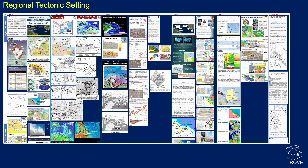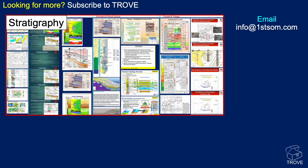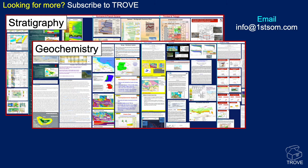With Trove, you can quickly assess a variety of models and interpretations to understand the differences, similarities and implications for different basins and plays. If you're looking for more information, you've got to subscribe to Trove. That's just a small part of our stratigraphy for this region. We have stratigraphic schemes for all the different regions, whether it be Trinidad and Tobago, Suriname and French Guiana, or indeed Guyana itself. We also have geochemistry, all the source rock information, maturity and various write-ups.